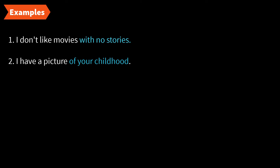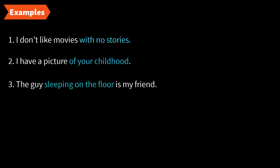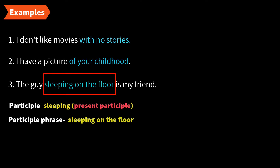Before we look at examples, let us understand what a participle is. A participle is a word that is formed from a verb which works as an adjective. Example: 'The guy sleeping on the floor is my friend.' Here, 'sleeping on the floor' is a participle phrase starting with the present participle 'sleeping,' modifying the noun 'guy.' Which guy? Sleeping on the floor.